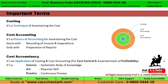Now let's see the three important terms which can be asked in the exams. First, hum dekhenge Costing. Costing ka matlab hai technique of ascertaining the cost — matlab vo technique jo cost pata karne ke liye use hoti hai, usi ko hum costing kehte hain. Iske examples hain: job costing, batch costing, standard costing, marginal costing, contract costing — ye sab examples hain costing techniques ke.